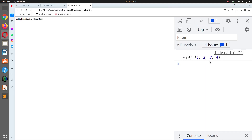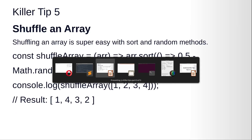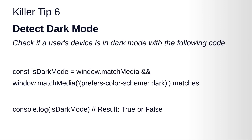Save and run it in the browser — you get different numbers each time, confirming it's shuffling the array. That's killer tip number five. Now let's look at killer tip number six: detect dark mode — check if a user's device is in dark mode.